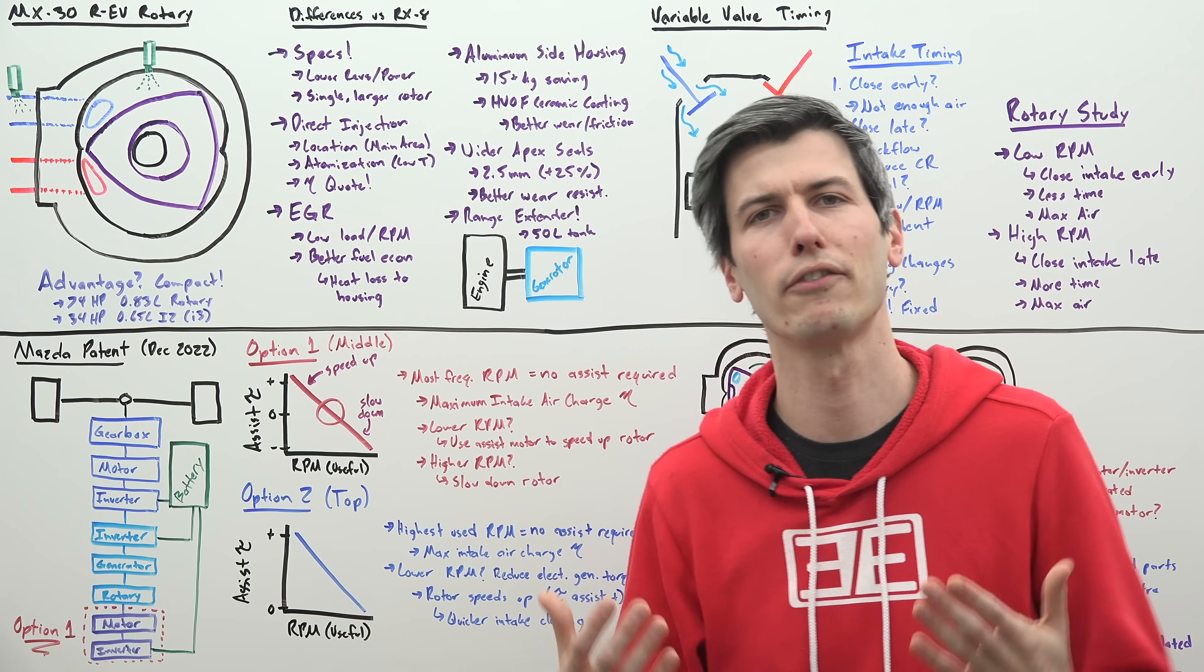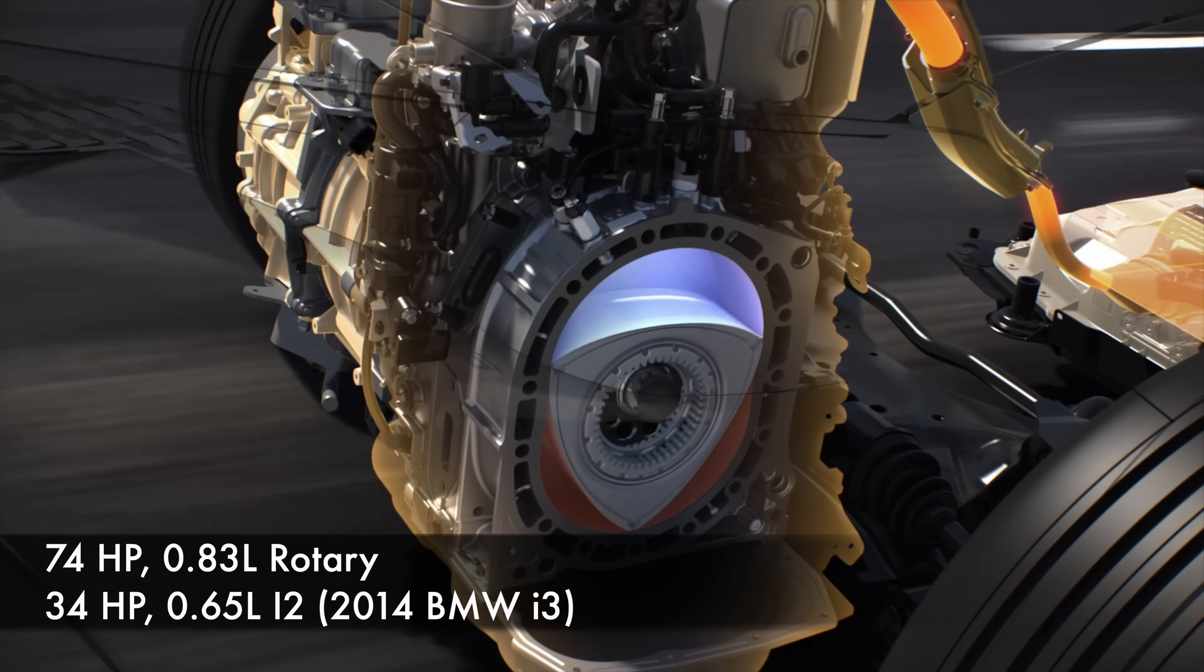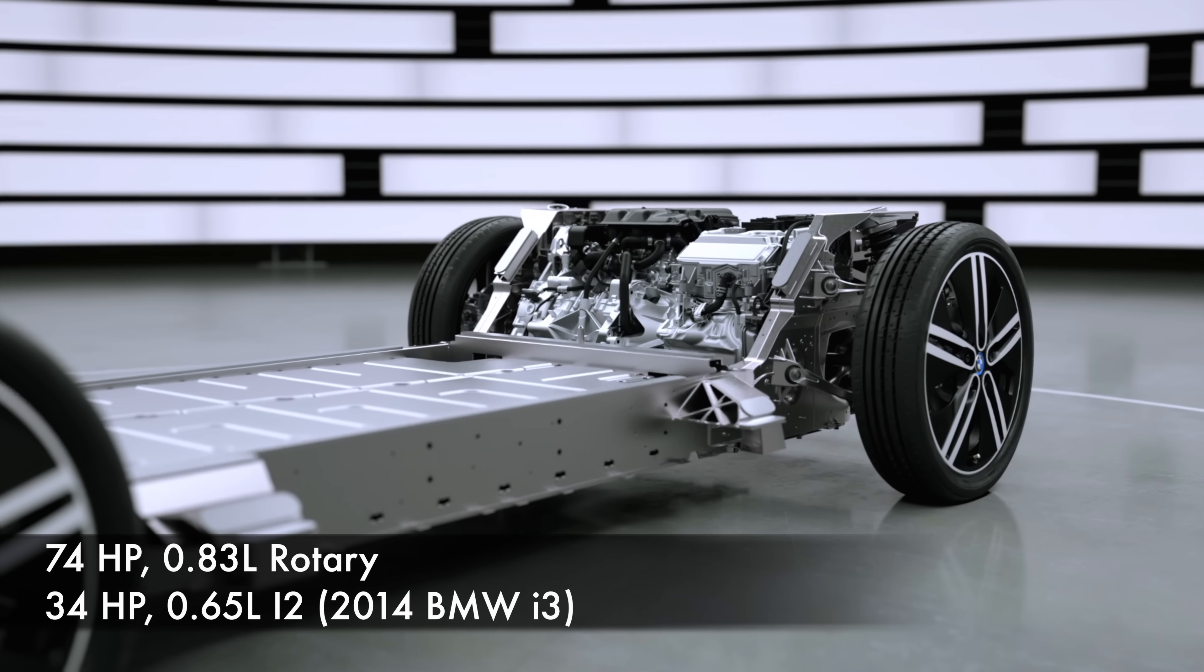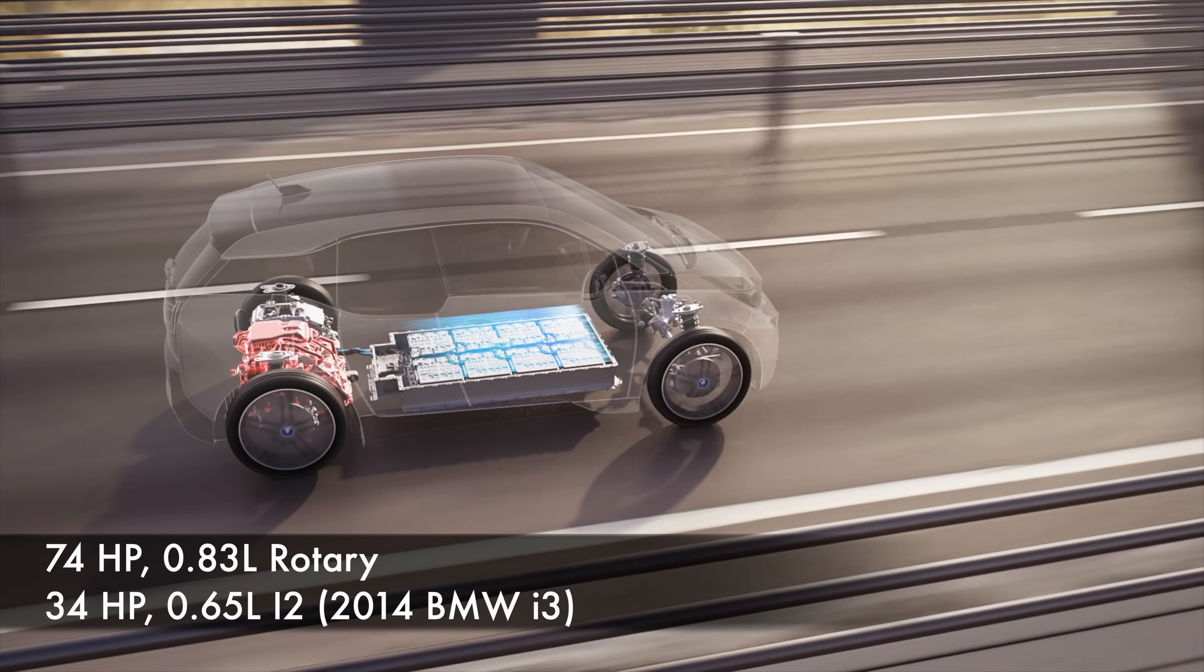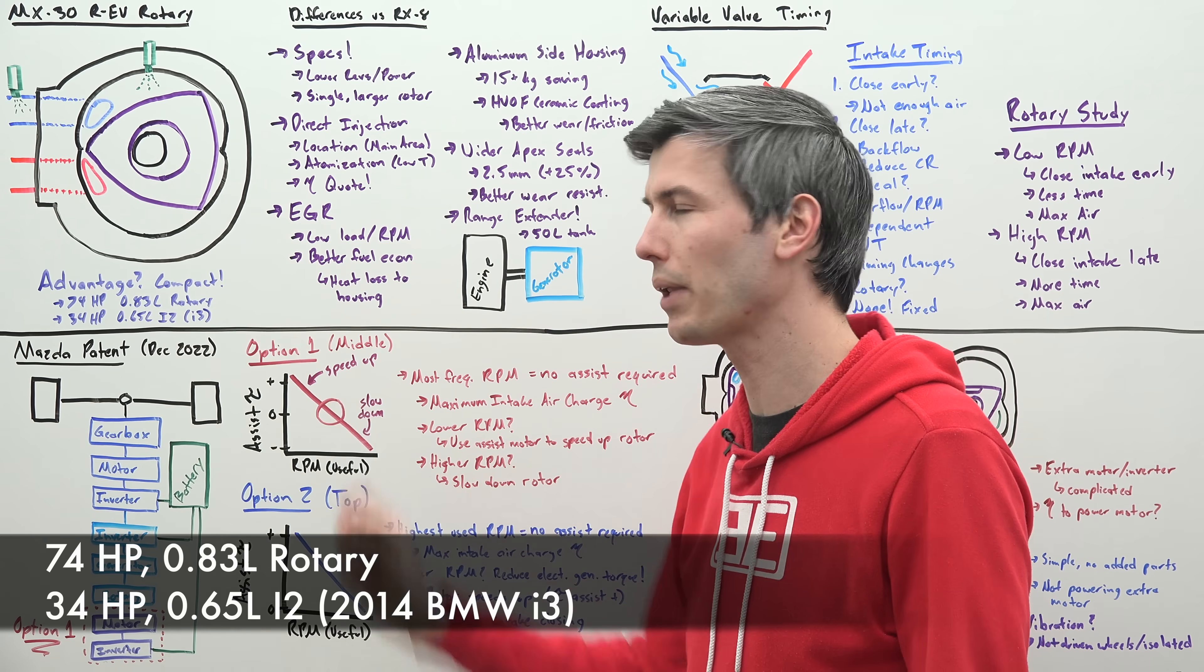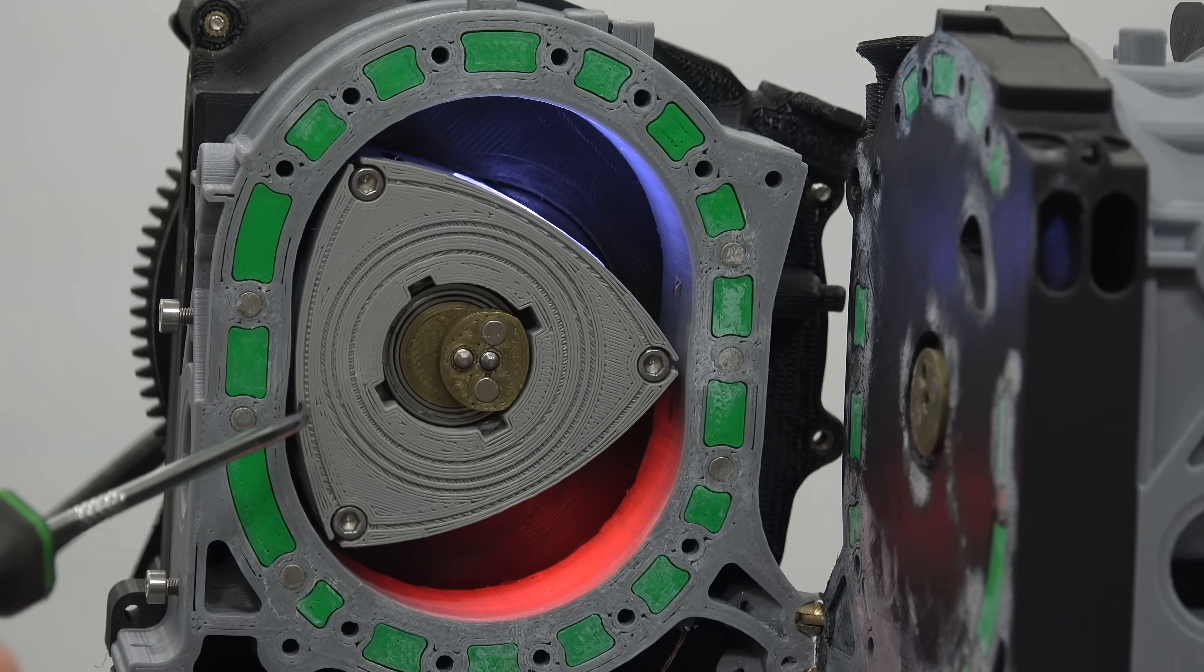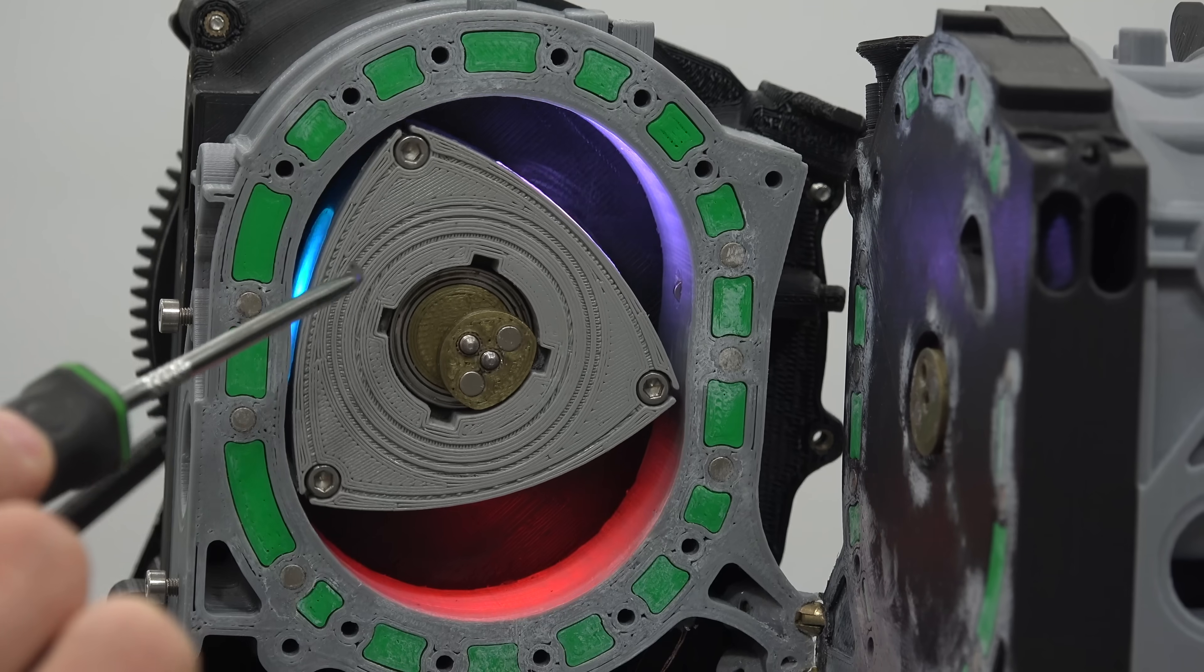Well Mazda says the big advantage here is that the engine is compact. So if you compare the 0.83 liter making 74 horsepower versus BMW's inline two-cylinder used in the i3 as a range extender that's just using 34 horsepower with a 0.65 liter. So fairly similar in displacement yet wildly different power numbers and a big reason for that of course being that a rotary engine for each rotor has three active combustion chambers which are all happening simultaneously.